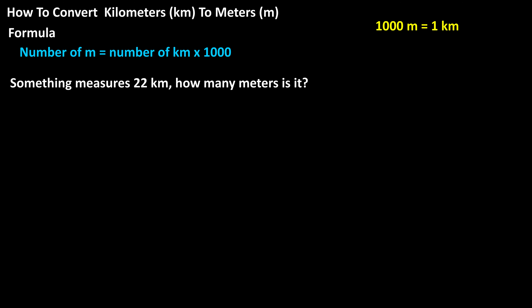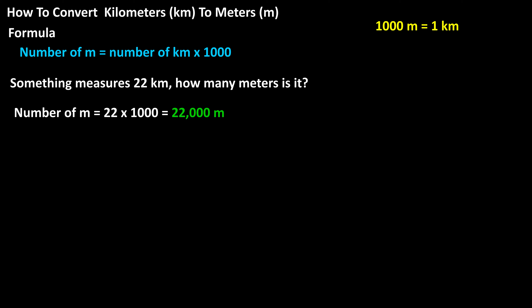As an example, if something measures 22 kilometers, how many meters is it? Using the formula, the number of meters equals 22 times 1,000, which calculates to 22,000 meters.